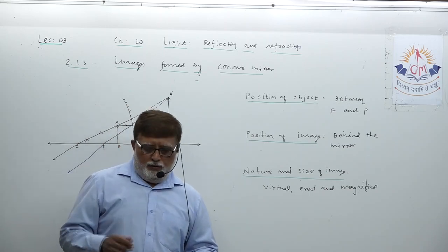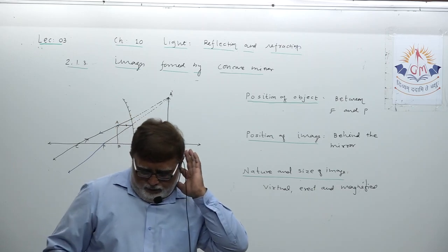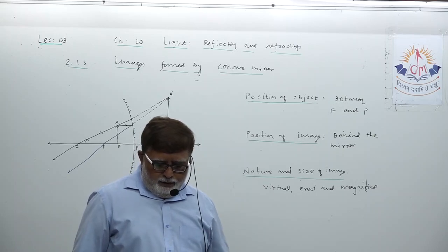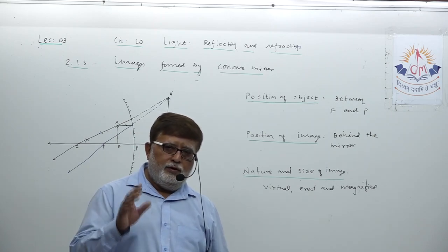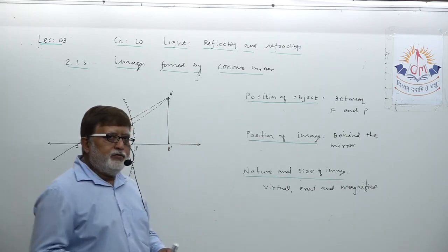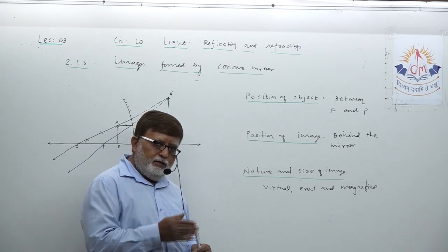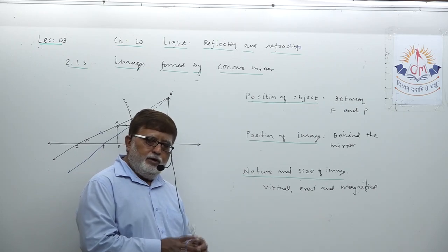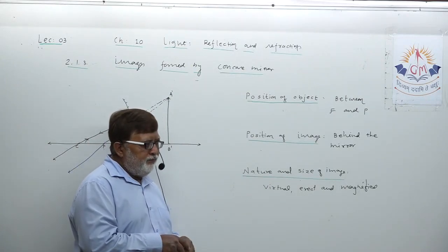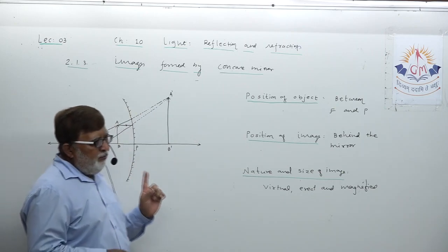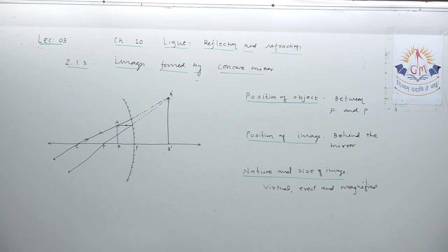For today's homework, dear student: verify question number 3 at the back — 'With the help of ray diagram, state position and nature of the image for the following positions of an object for concave mirror.' We have already practiced all diagrams: infinity, further than center of curvature, at center of curvature, between C and F, at F, and between F and P — all six diagrams. Draw them, write nature and size exactly in detail. Prepare all ray diagrams properly. Thank you very much.